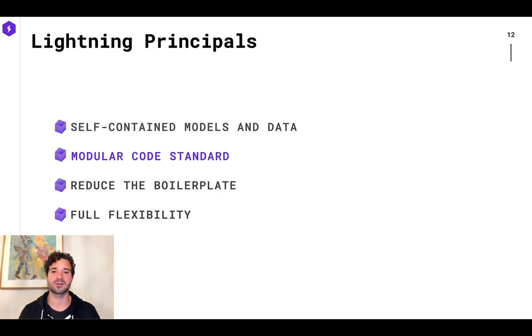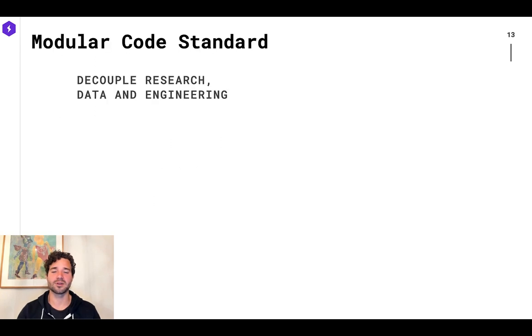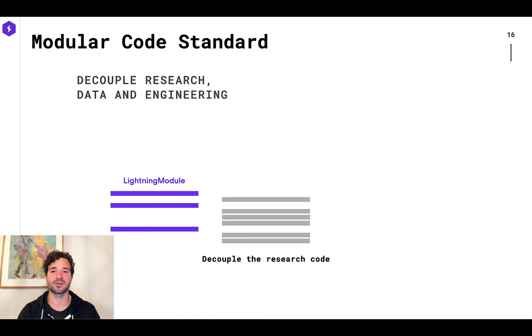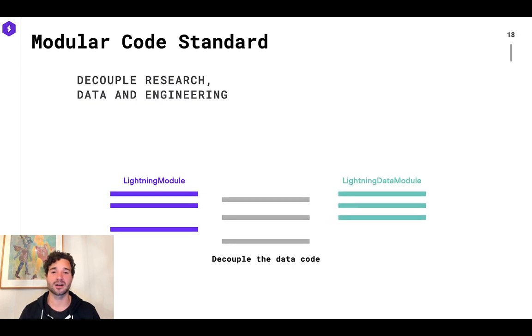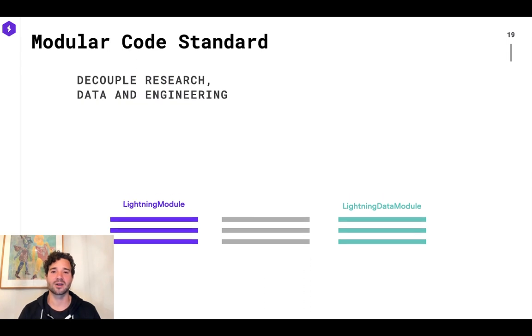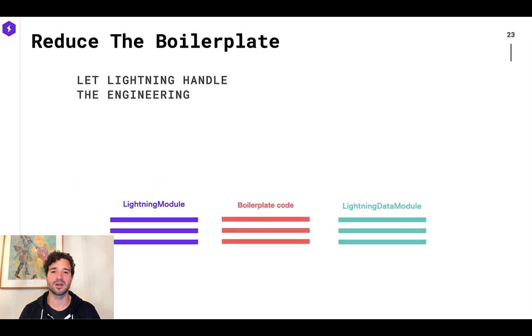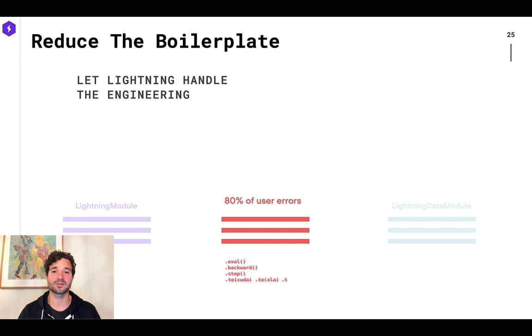The second one is modular code standards. So let's take a look at your deep learning code. Imagine every one of these lines is a line of code. So we're going to factor out your code into three parts. The first part is going to decouple the research. And that's going to live in the Lightning Module. This is where you want to spend 99% of your time. The next part is to decouple the data. And this is going to live in the Data Module. And the Data Module encompasses the data loaders, the transforms, and everything you need to make that data set self-contained as well. And then everything else that is left is going to be automated by the trainer. So this is the boilerplate that most people get wrong. And there's a lot of surface area for errors as well.